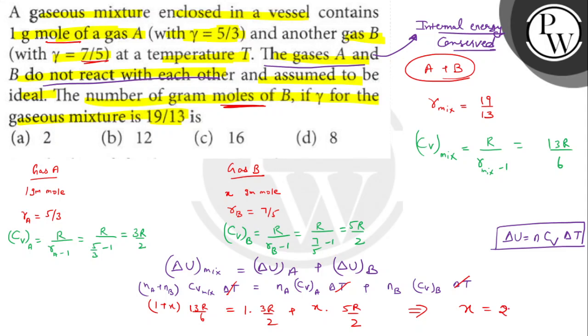Solving this equation, we get x equals 2. So the number of gram moles of gas B is 2, which is option A. Thank you.